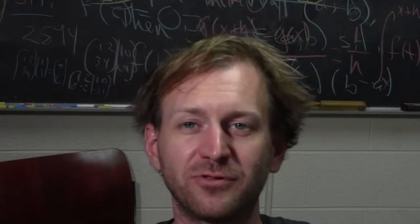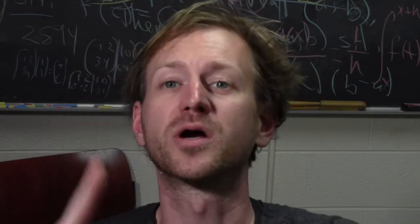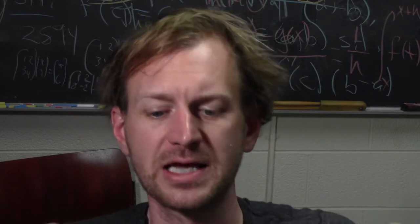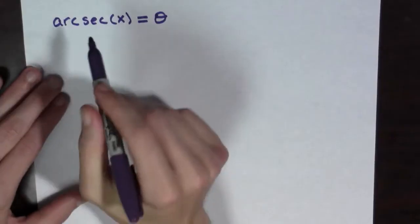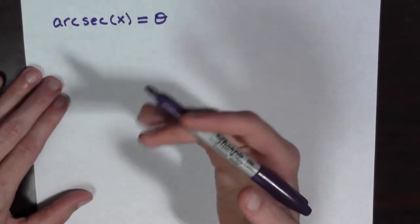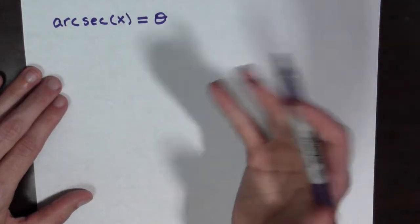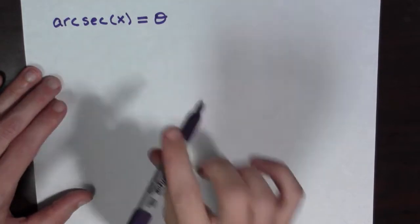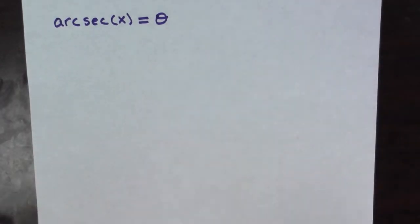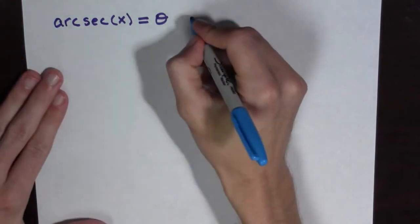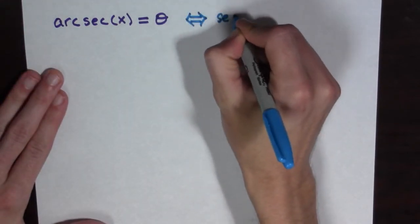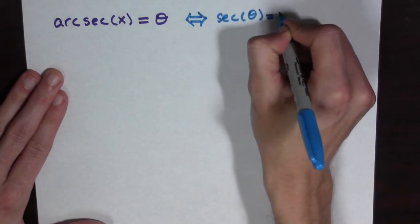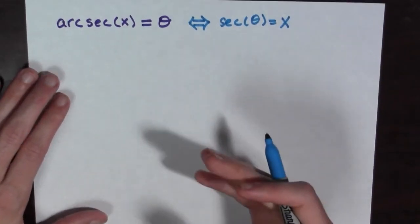Now that we know what the graph looks like, let's go ahead and actually try to do it. We're going to use implicit differentiation, the chain rule, and technically the inverse function theorem. We have arc secant of x equals theta — to remind us that arc secant takes in numbers and outputs angles — and this is true exactly when secant of theta is equal to x.